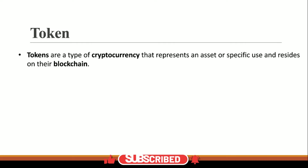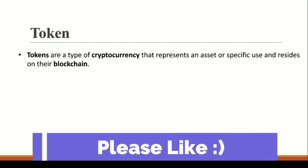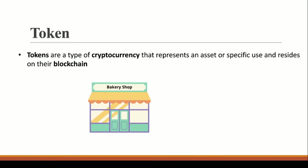Let's say you go to a bakery shop that has some delicious pastries and cakes. You find a cake you want to buy and tell the owner. But the bakery shop owner says he cannot directly provide you the cake — if you want to buy it, you need to first buy some tokens from him, and then go to the cake counter to get the cake.